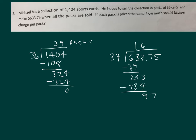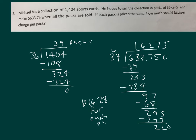Bring down the 7. 97 divided by 39 is 2. 2 times 39 is 68. 97 minus 68 is 29. Bring down the 5. 7 times 9 is 63, regroup 6. 7 times 3 is 21, plus 6 is 27. We actually have enough of an answer here where it's $16.28 per each pack of cards.